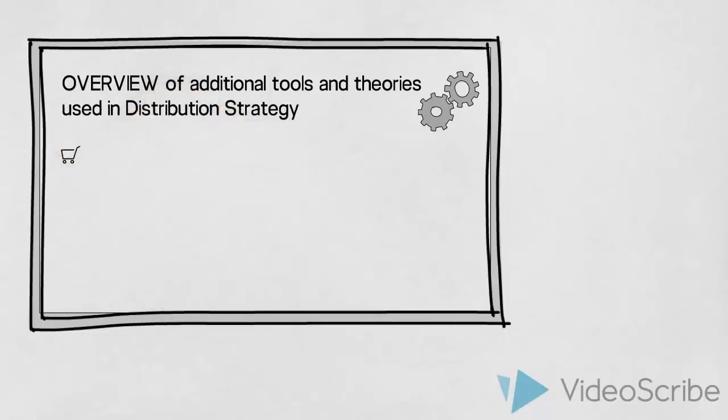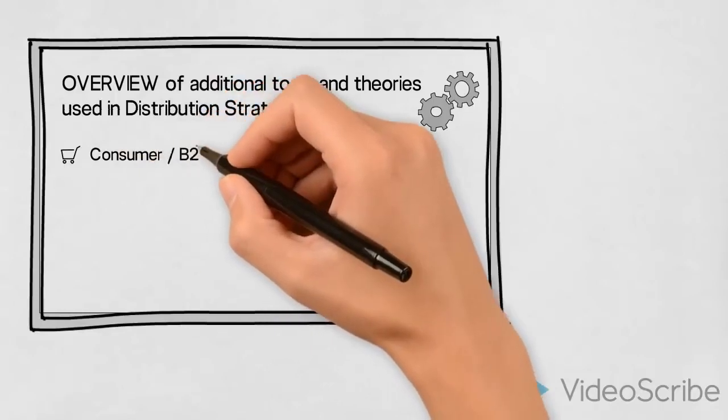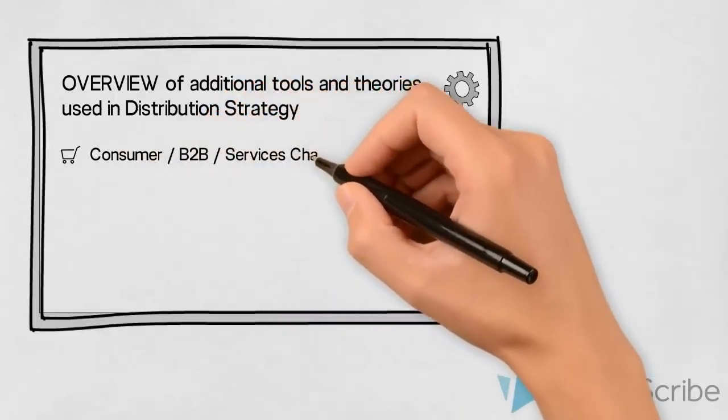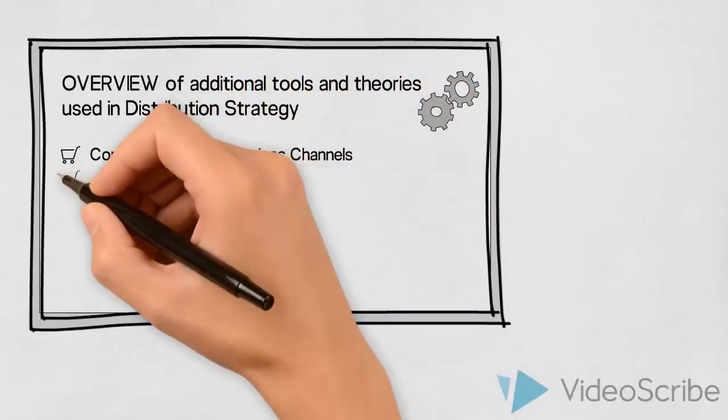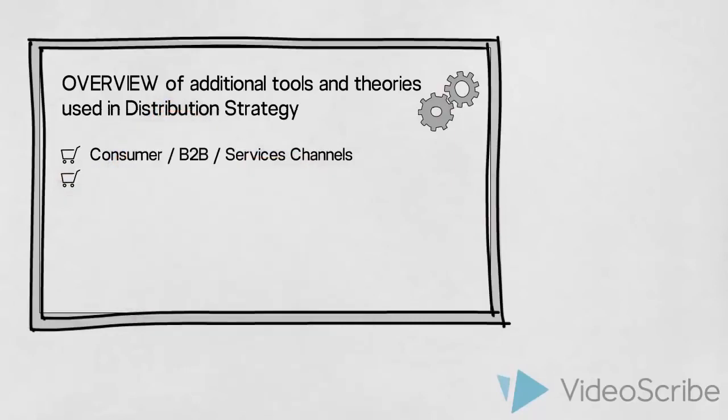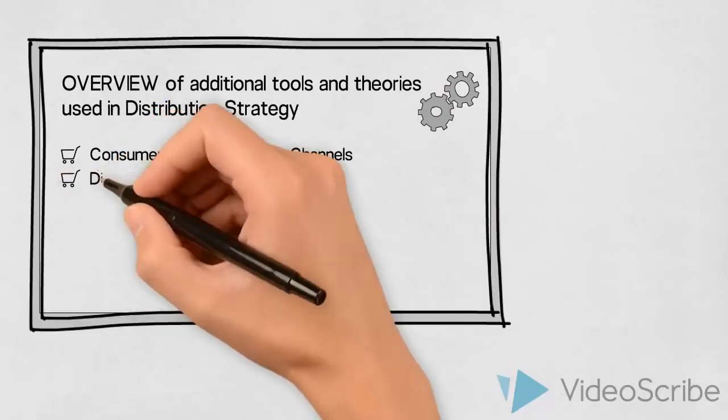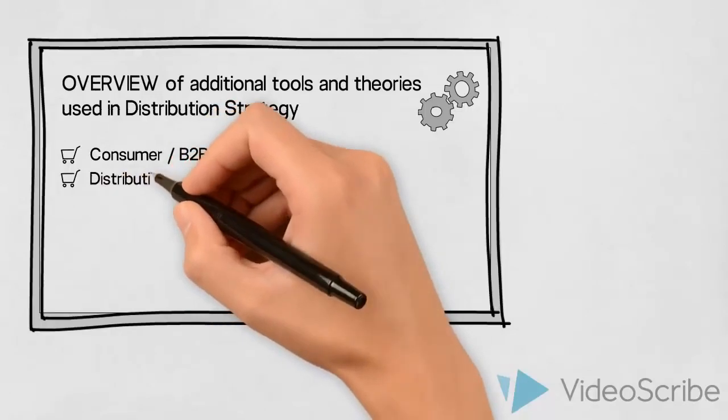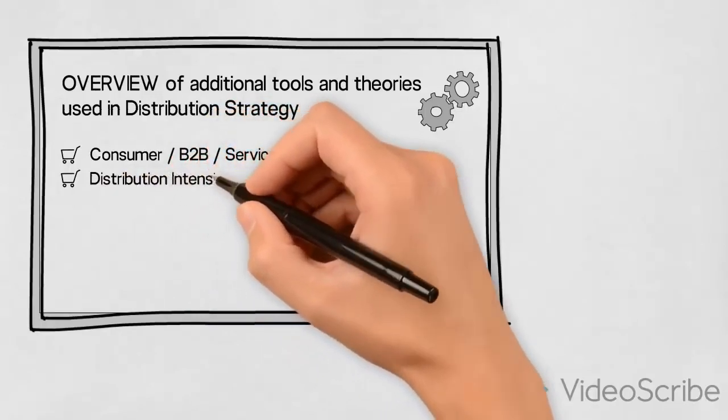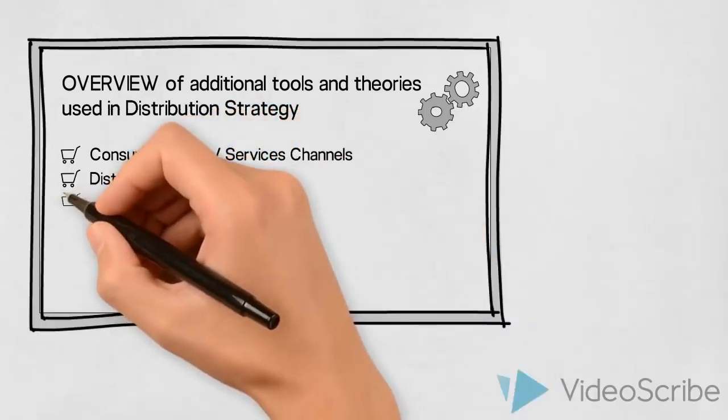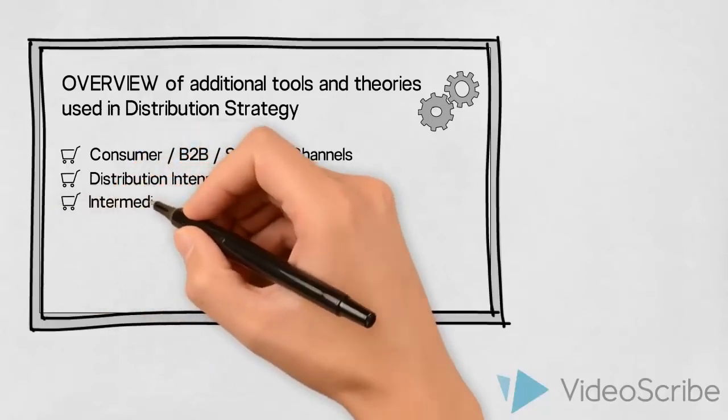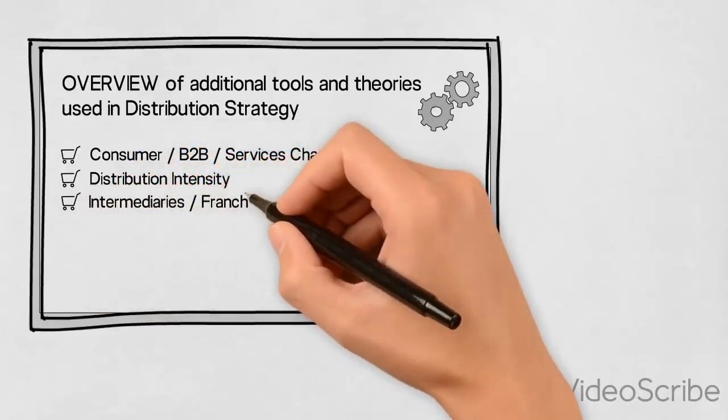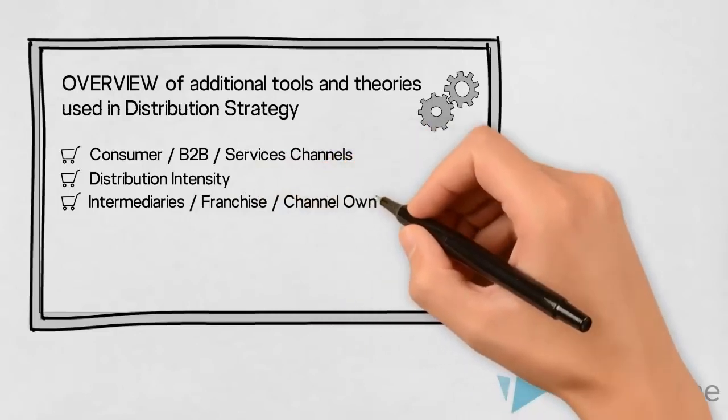We would determine whether we're dealing with consumer, B2B, and/or services distribution channels. Distribution intensity should be looked at—to what extent and in which context do we want our product or service to be available to the end consumers. Thirdly, we would consider whether to use independent intermediaries, setting up a franchise operation, or perhaps go for channel ownership.